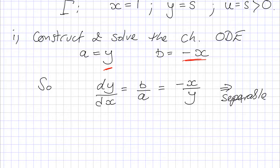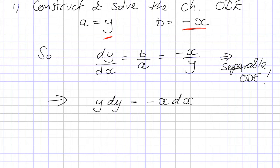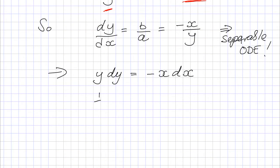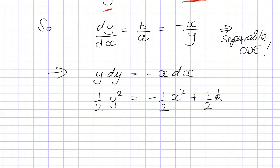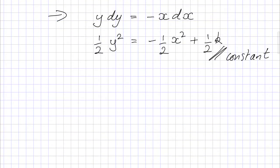We can see that this ODE is separable, and we know how to solve separable ODEs. This immediately gives us y dy equals minus x dx, and integrating both sides gives one-half y squared equals minus one-half x squared plus a constant, which I'll call one-half k for simplicity.